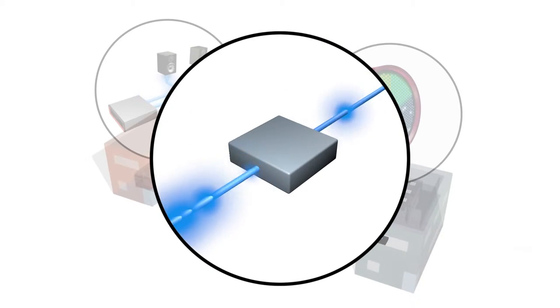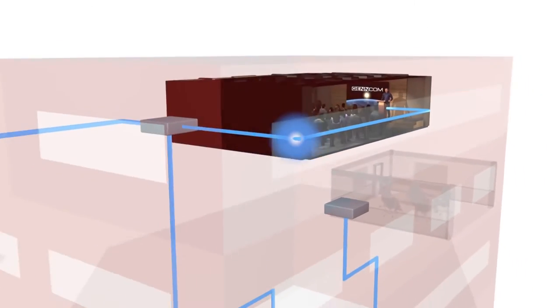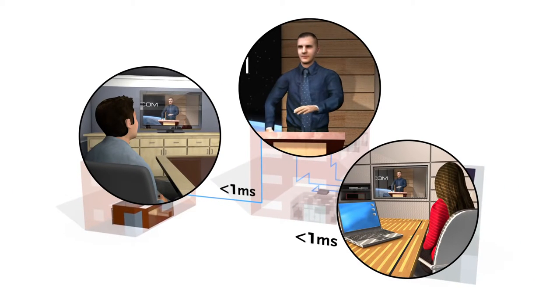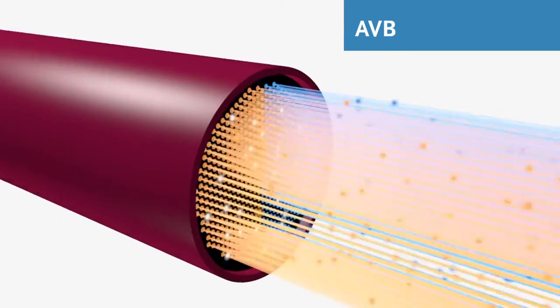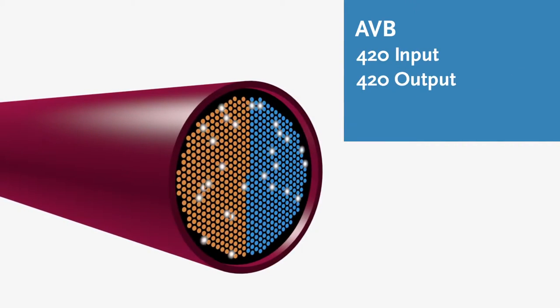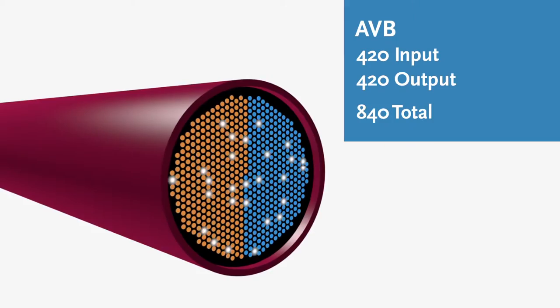and traffic shaping, which evenly distributes the stream over time to prevent packets from transmitting in bursts. These pillars make it possible in many cases to have latency of less than a millisecond over multiple hops in a 100 megabit network. And AVB has the capacity to transmit up to 420 digital audio input and 420 audio output channels, up to 840 channels total.